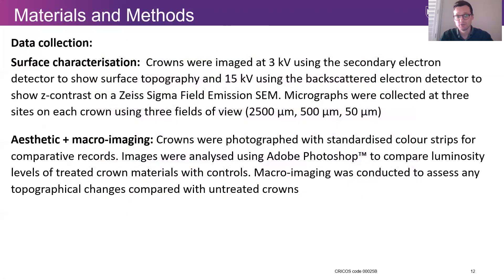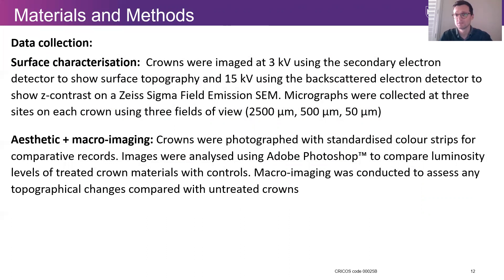For the data collection, to get the surface characterisation we used scanning electron microscopy. Images were collected at three distinct sites on each crown using three magnifications, and we also did aesthetic and macro imaging. The crowns were photographed with standardised colour strips for comparative records, and the images were then analysed using Adobe Photoshop to compare luminosity levels with the controls. Macro imaging was also conducted to assess any broad topographical changes compared with the untreated samples.